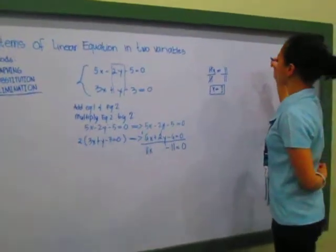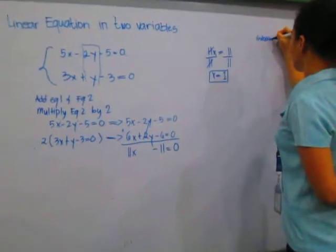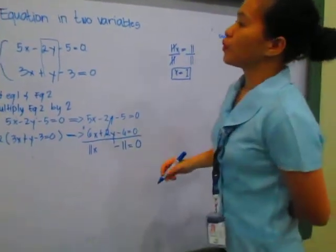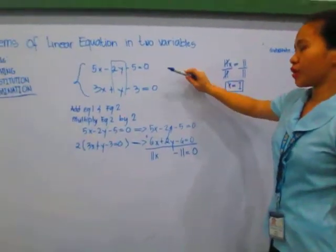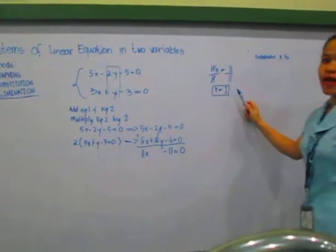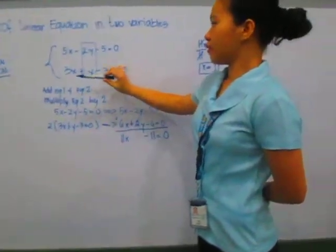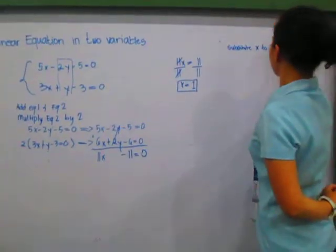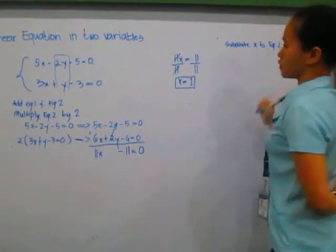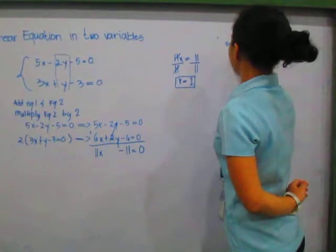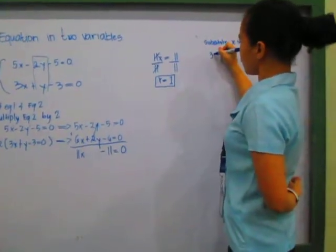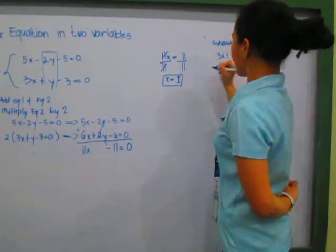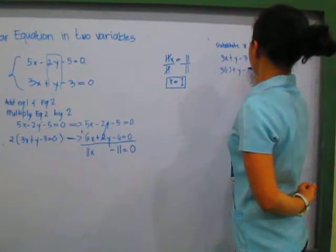Next step is to substitute x. We have to choose which equation we are going to use to substitute the value of x. Since the coefficients of equation 2 are lesser than equation 1, I'll use equation number 2. We are going to substitute the value of x. The equation 2 is 3x plus y minus 3 equals 0. So 3 times 1, which is the value of x, plus y minus 3 equals 0.